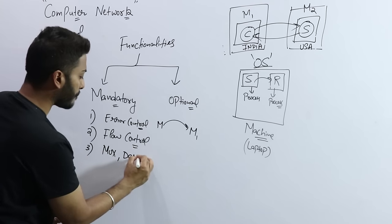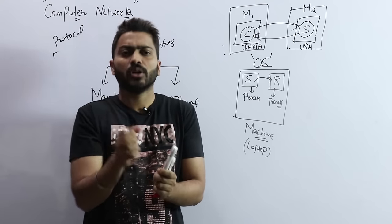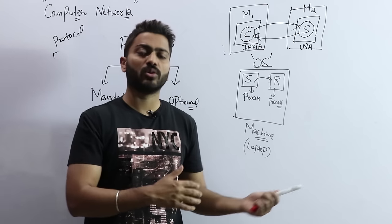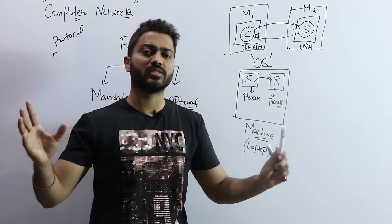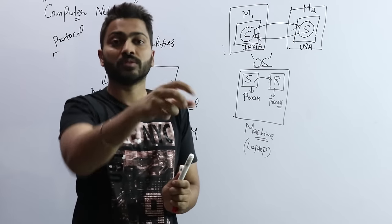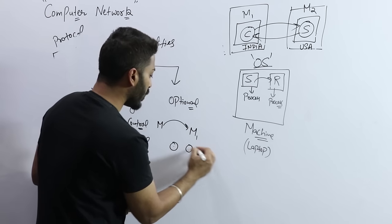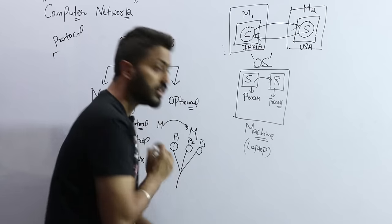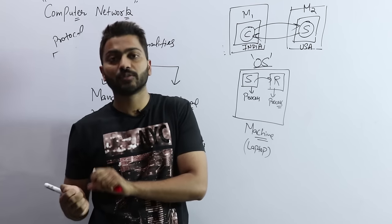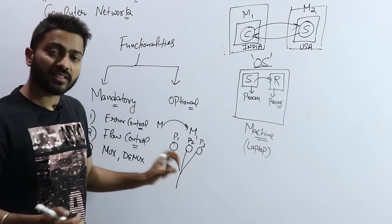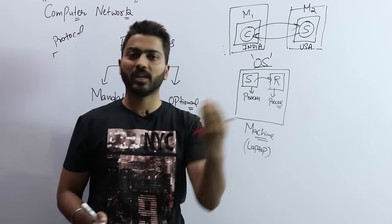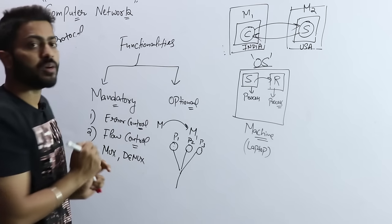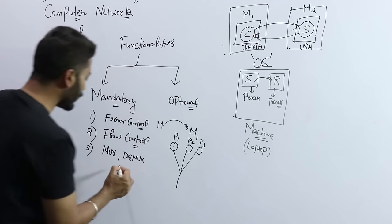Another mandatory functionality is multiplexing and demultiplexing. In my machine, many programs and processes are running — web browsing, downloading, uploading, etc. Among all these processes, which process is sending which data? Multiplexing and demultiplexing helps with that — this is basically the transport layer concept which we will discuss in detail later. Similarly, if a message arrives at my laptop — like an email — which particular process should it go to? That is also a key function, so it is kept in mandatory functionalities.